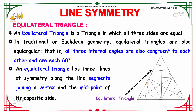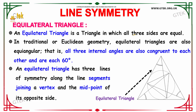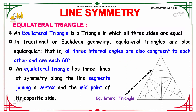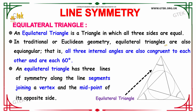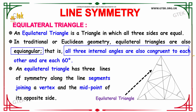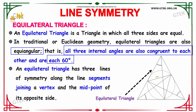Moving on, we are going to discuss about the equilateral triangle. An equilateral triangle is a triangle in which all three sides are equal. In traditional or Euclidean geometry, equilateral triangles are also equiangular, which means all three internal angles are congruent to each other and they are 60 degrees each.